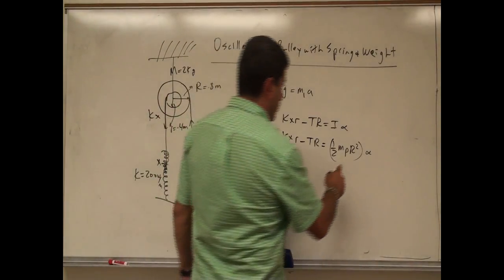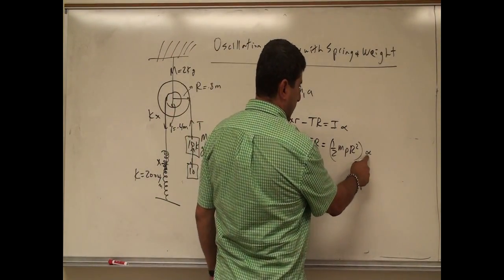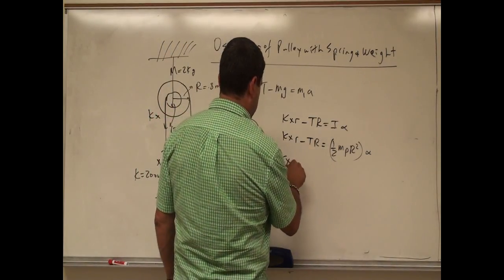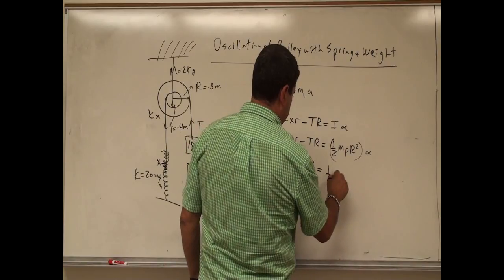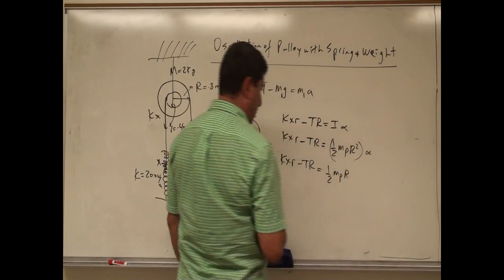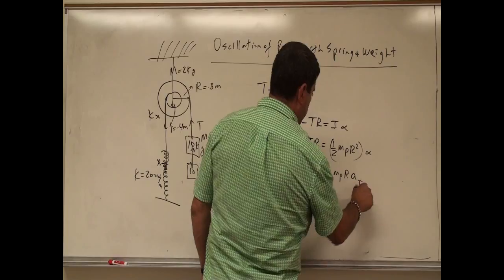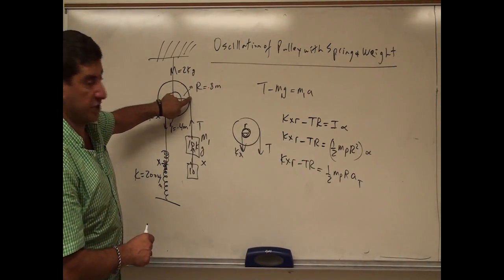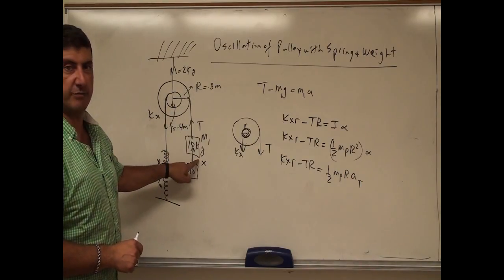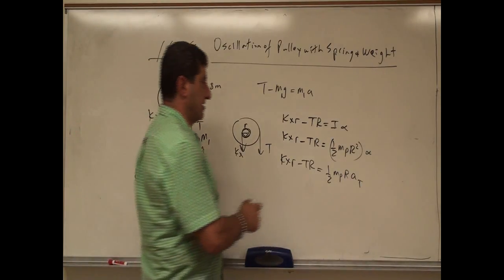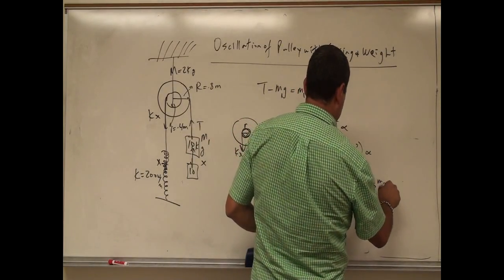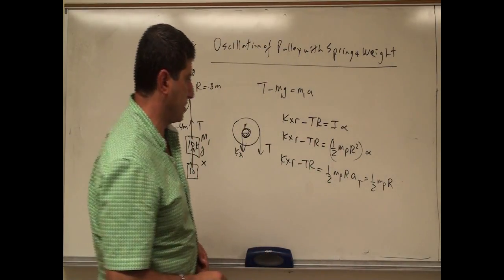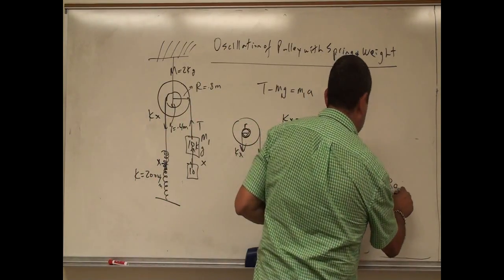Then we use the relation that big R times alpha equals the tangential acceleration at the edge of the pulley. So we have kxr minus Tr equals one-half mass of pulley times r times alpha. Then the tangential acceleration at the edge of the pulley is the same as the acceleration of the block — they're accelerating together. So we substitute and get one-half mass of pulley times r times a.